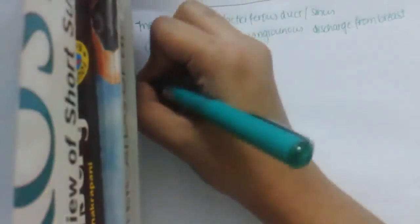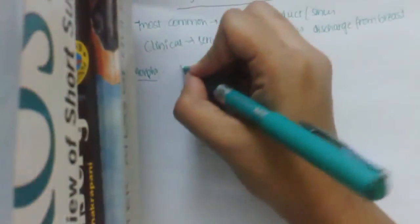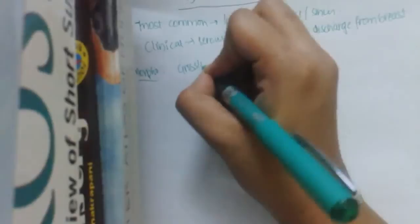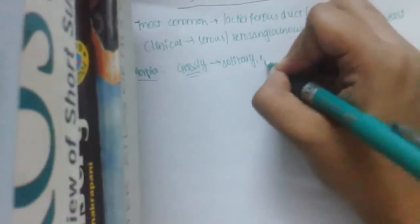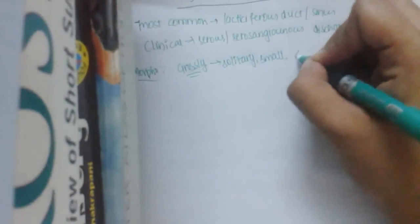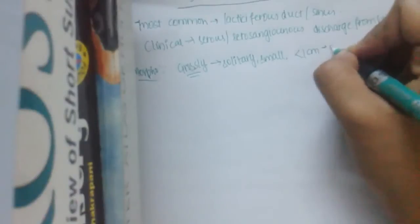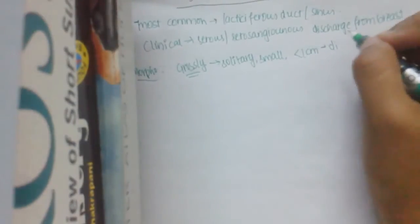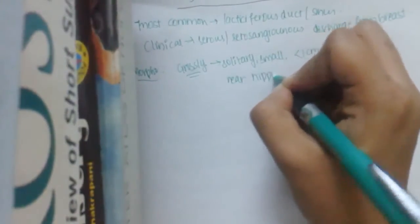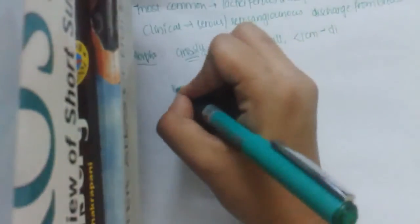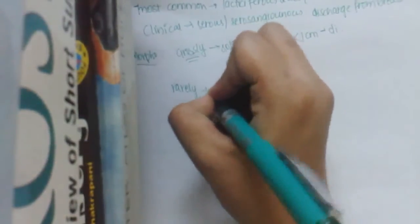Looking at the morphological features of intraductal papilloma: grossly it is solitary, single, small, and less than 1 cm in diameter, located on the major ducts near the nipple. Rarely, it may be multiple.